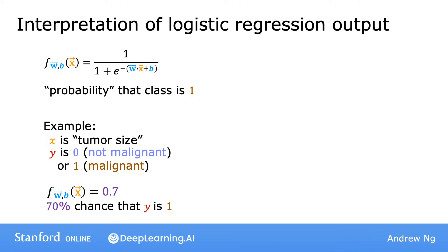Now, let me ask you a question. See if you can get this right. We know that y has to be either 0 or 1. So, if y has a 70% chance of being 1, what is the chance that it is 0?